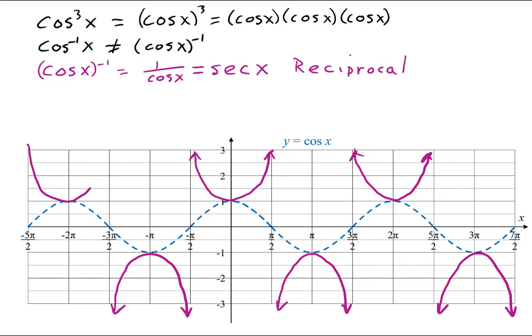If you put the negative 1 inside, cos⁻¹x, now you have the inverse cosine, which can also be written arc cosine.